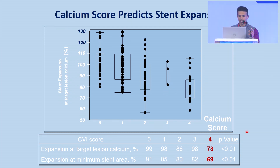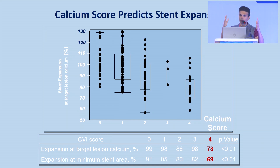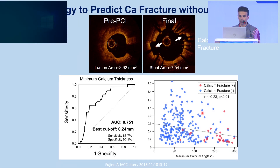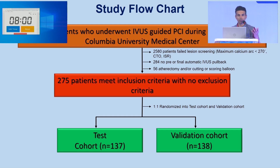When they looked at predictors of calcium fracture, what they found was that it's actually a much higher arc — 270 degrees with 0.5 millimeters of thickness — that was more predictive than 180. They then took all of the patients that were treated with IVUS-guided PCI, which is more common because it allows you to treat patients with chronic kidney disease.